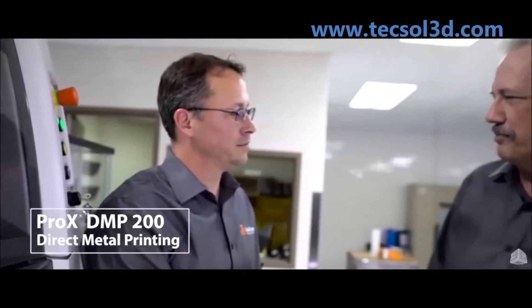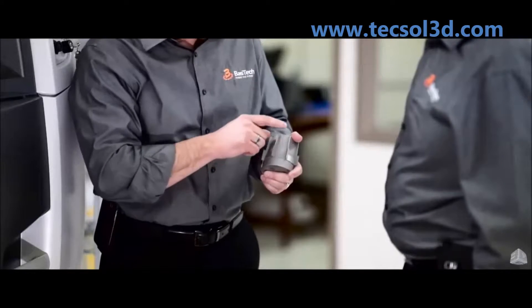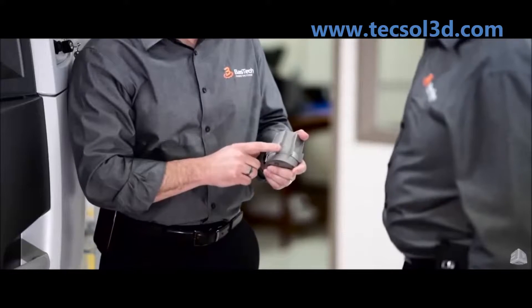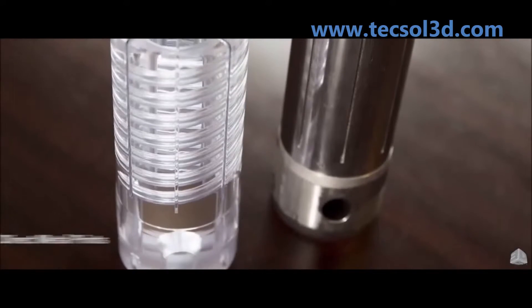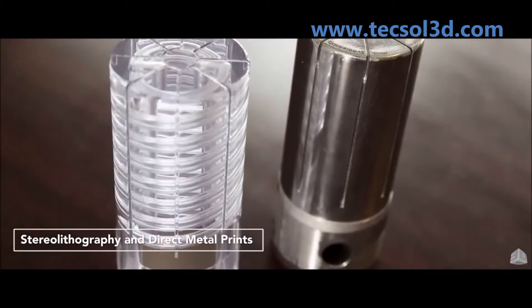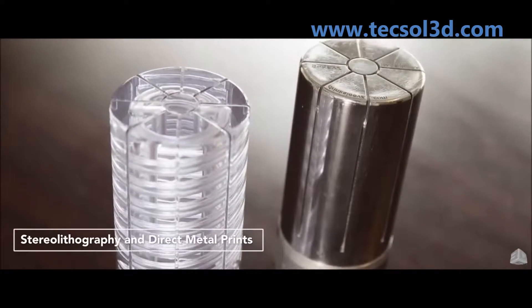With direct metal printing, I can do conformal cooling that I could not do with conventional tooling. This allows me to get the channels right up a consistent distance away from the part geometry, an even distance along the geometry, and work around where I have to have ejector pins and where I have to have attachment screws and other features.